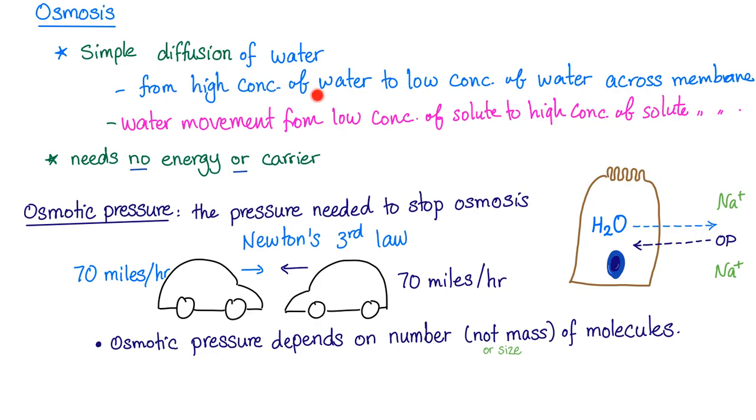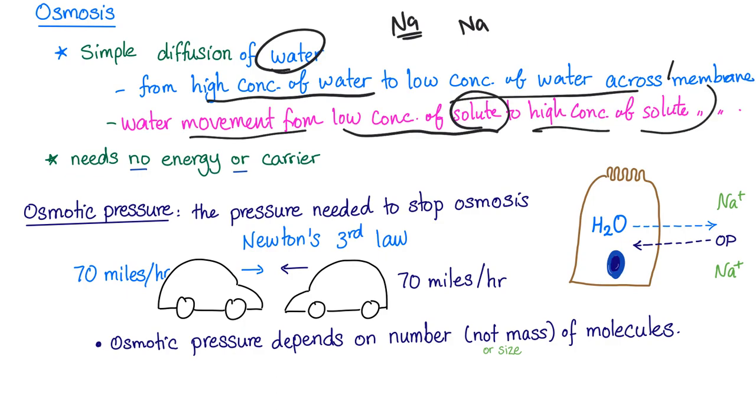Define simple diffusion from high concentration of water to low concentration of water across the membrane. It's like when we are defining sodium diffusion from higher concentration of sodium to lower concentration of sodium. Do the same exact thing on water. From higher concentration of water to lower concentration of water across a semi-permeable membrane. Or you can do this. Water movement from low concentration of solute to high concentration of solute. It's the same exact thing. It needs no energy. It needs no carrier because it's a sample diffusion.